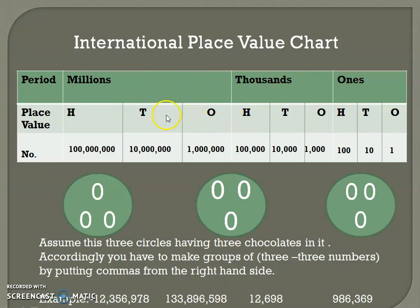Millions is again having ones, tens, and hundreds place. So you have to be very clear with this concept: in the international number system, each period has ones, tens, and hundreds place value. Now we'll learn how we can put commas in the international number system.